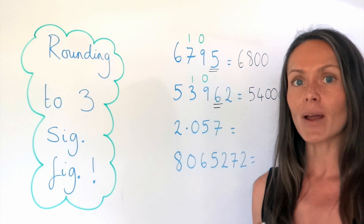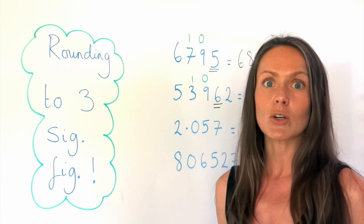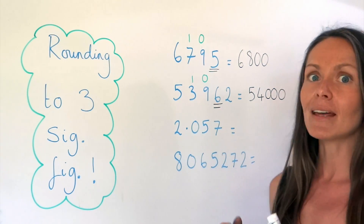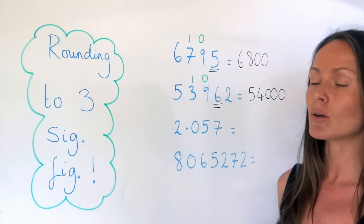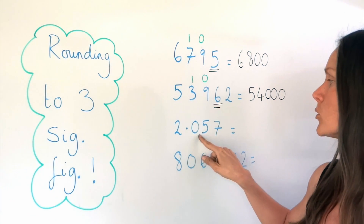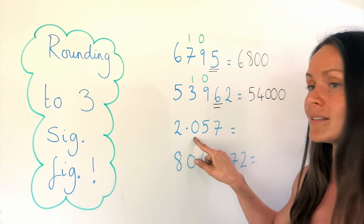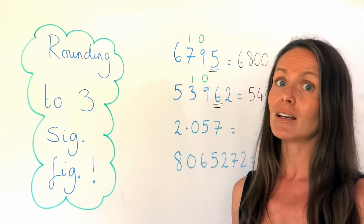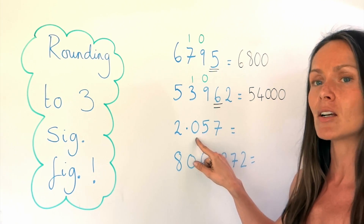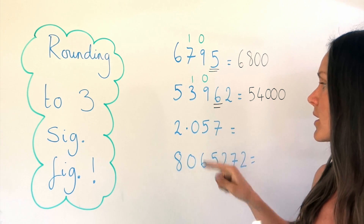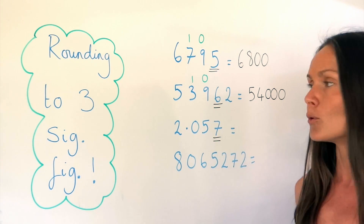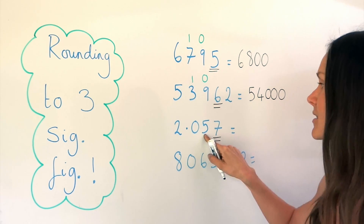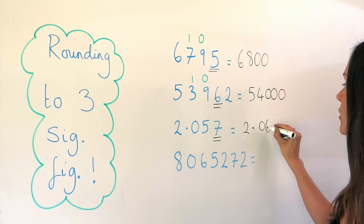Remember earlier I said when zeros are at the beginning of the number they don't count as significant figures, and the same at the end. Well, when they're in between, they do count. So if I'm counting to three significant figures, I'm counting one, two, three — and I'm including that zero as one of my significant figures. When the zero is wedged between other numbers, it does count as a significant figure; we can't skip it. So we count one, two, three, and check the fourth figure. The seven is bigger than five, so it rounds this digit up to six. So it becomes 0.006.